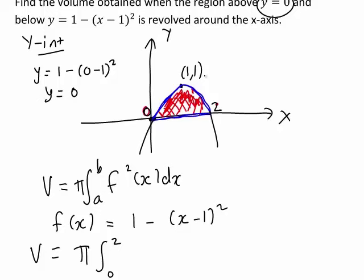Therefore, the volume equals π times the integral from 0 to 2 of [1 - (x - 1)²] squared. We're working out the integral of that with respect to x.